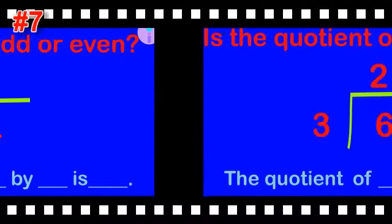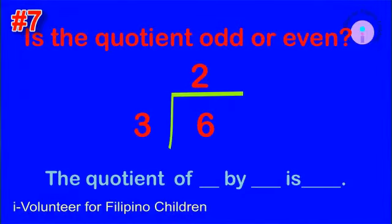Kindly repeat. Item number seven: is the quotient odd or even? The quotient of six by three is even.